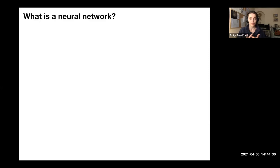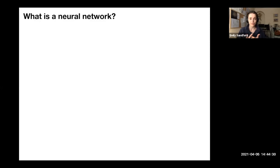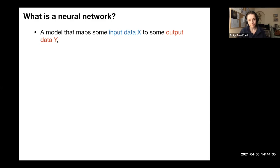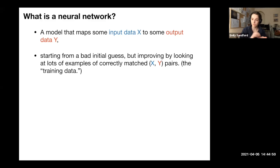What is a neural network? A neural network is a model, fundamentally, that maps some input data — call that X — to some output data, which we'll call Y, like many other techniques. But a neural network not only defines the model itself, it also encompasses a method for fitting the model: starting from a bad initial guess and improving gradually by looking at successively more examples of correctly matched input and output data. That's called the training data.